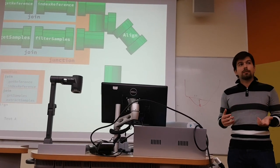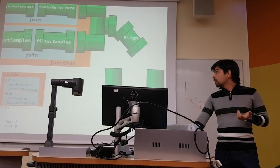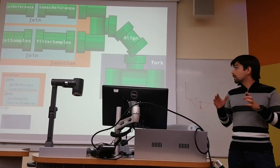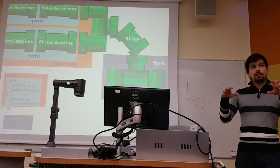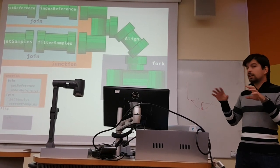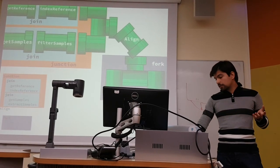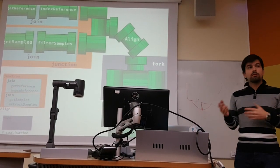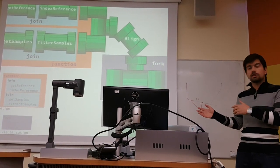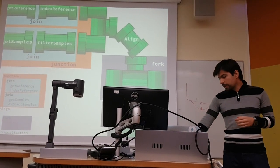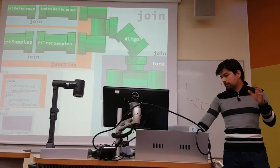Then you want to run two experiments — test A and test B — so at this point your pipeline forks. Both tests will be reading the aligned data from the same source, not copying it. As soon as one test is done, you can pipe it to a visualization or a plot without waiting for the other test to finish. Then you bind all these things with another join for an outer join.